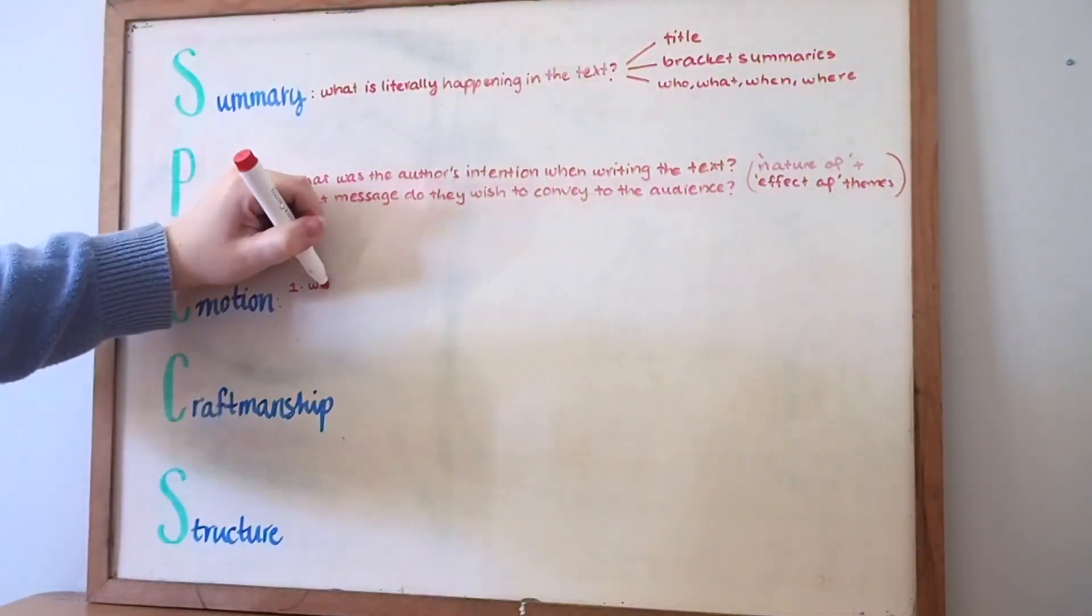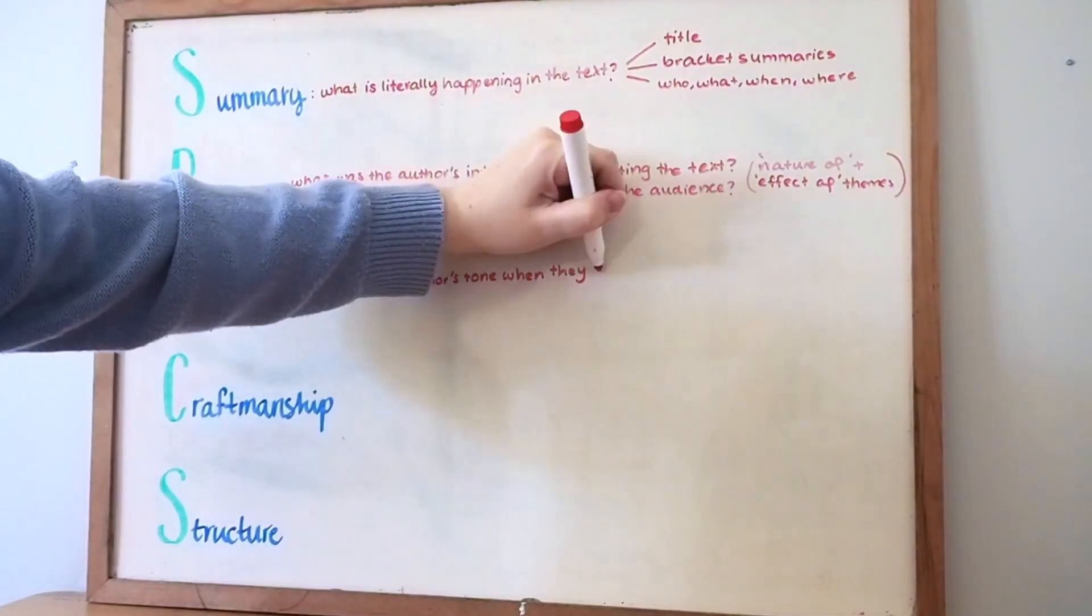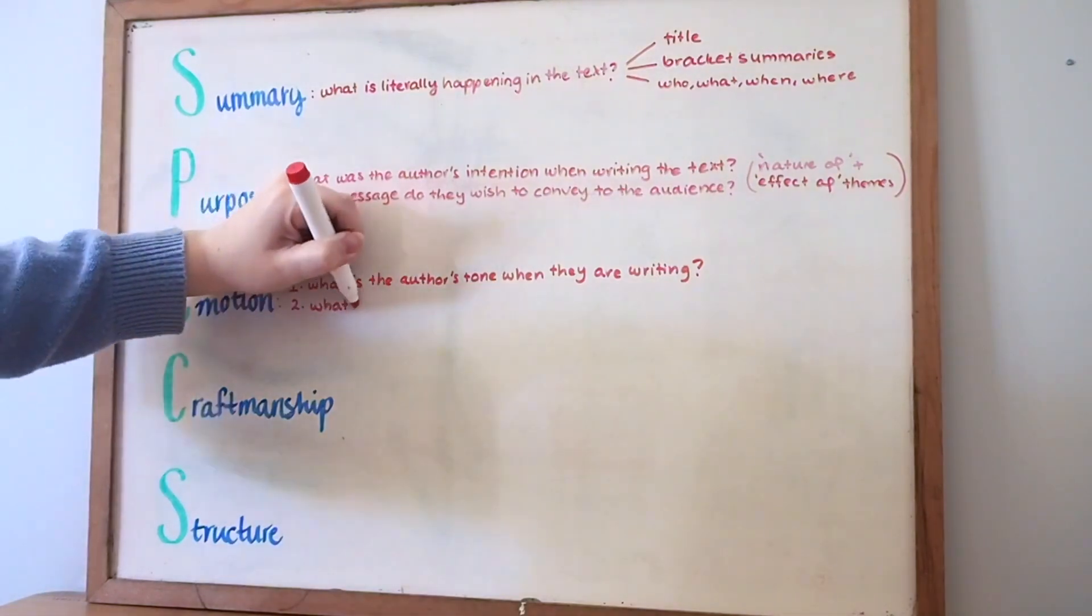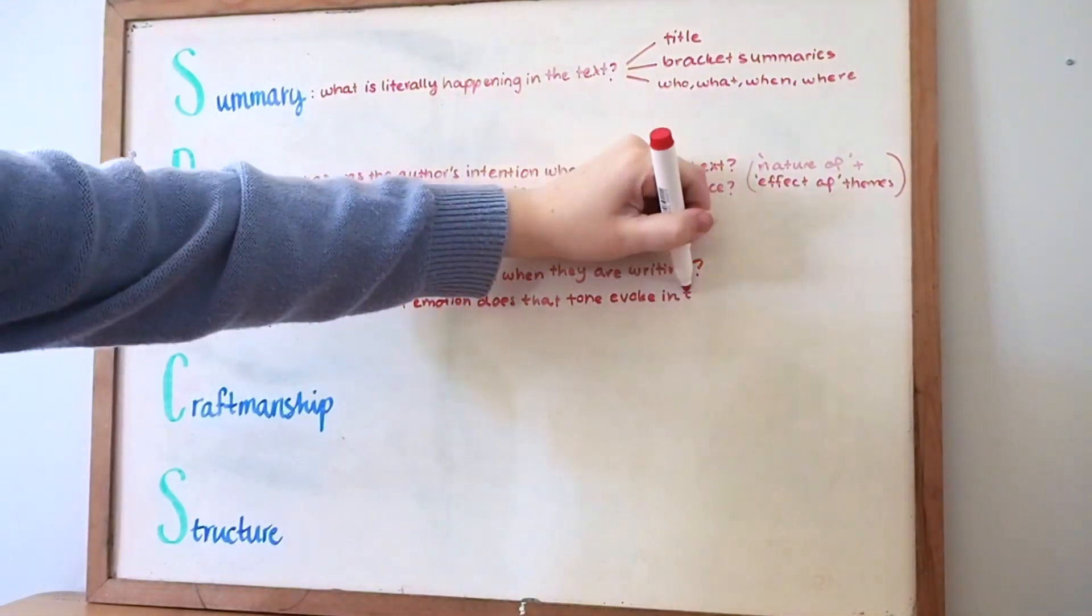The third step is emotion and this has two parts. Firstly, what is the author's tone when they're writing, and secondly what kind of emotion does that tone evoke in the audience.